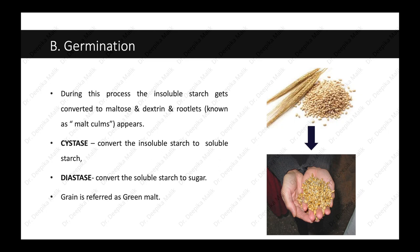The second part of the malting process is germination. During this process, the insoluble starch gets converted to maltose and dextrins, and rootlets — also called malt culms — begin to appear. The two enzymes produced by these grains are cytase, which converts insoluble starch to soluble starch, and diastase, which converts soluble starch to sugar. The grain after germination is referred to as green malt.